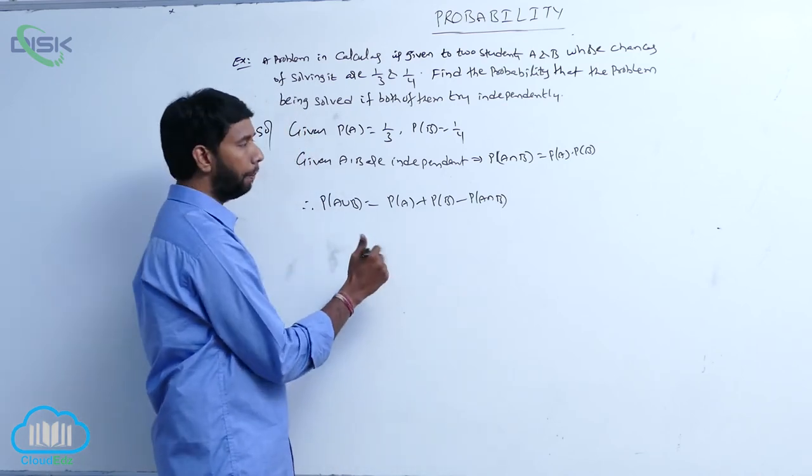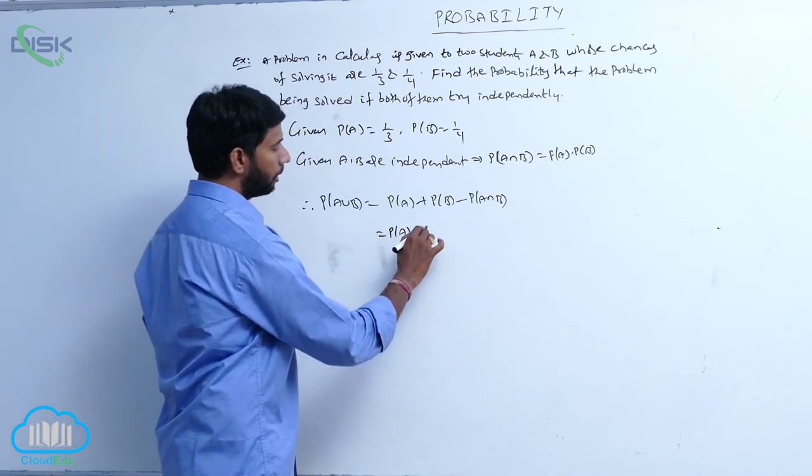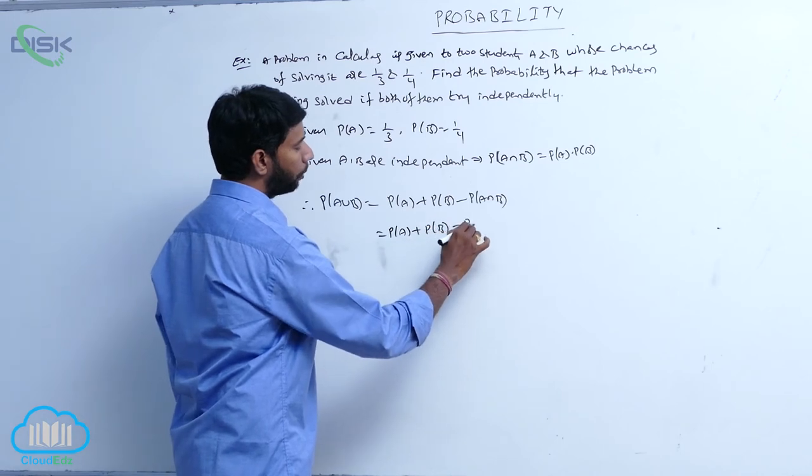Here, A and B are independent events, then P of A intersection B is equal to P of A into P of B.